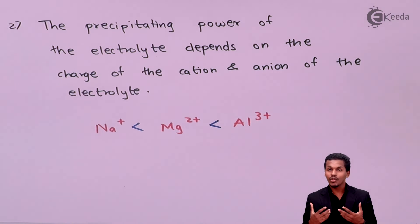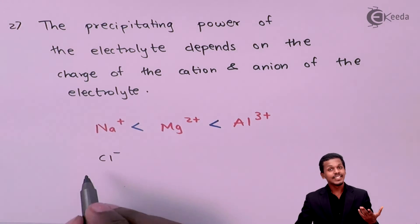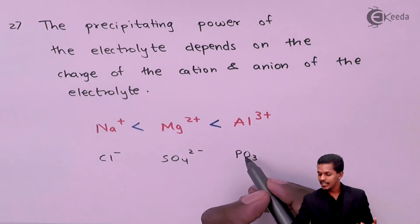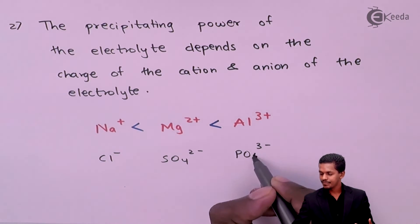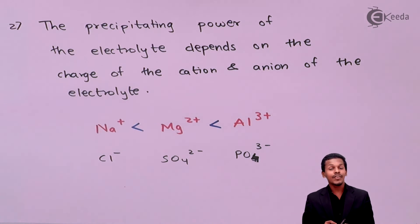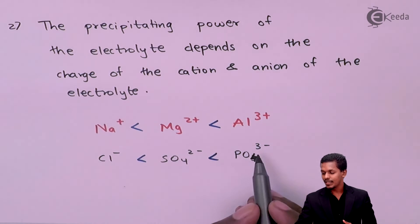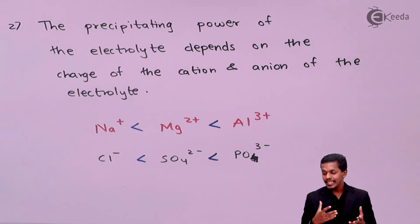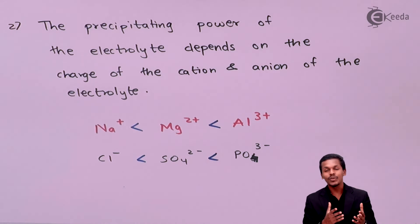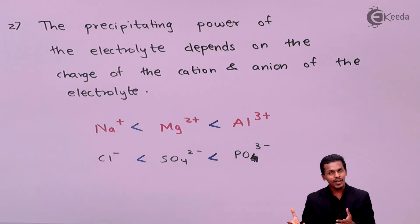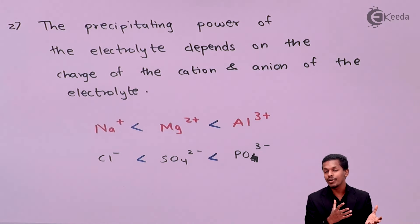Similarly for anions: comparing Cl⁻, SO₄²⁻, and PO₄³⁻ — the one with greater magnitude of charge has more precipitating power. Therefore PO₄³⁻ has more precipitating power than SO₄²⁻, which has more than Cl⁻. These ions, as part of the electrolyte, are able not only to neutralize the colloidal particle but also to form a precipitate with it. This is what the Schulz-Hardy rule describes.